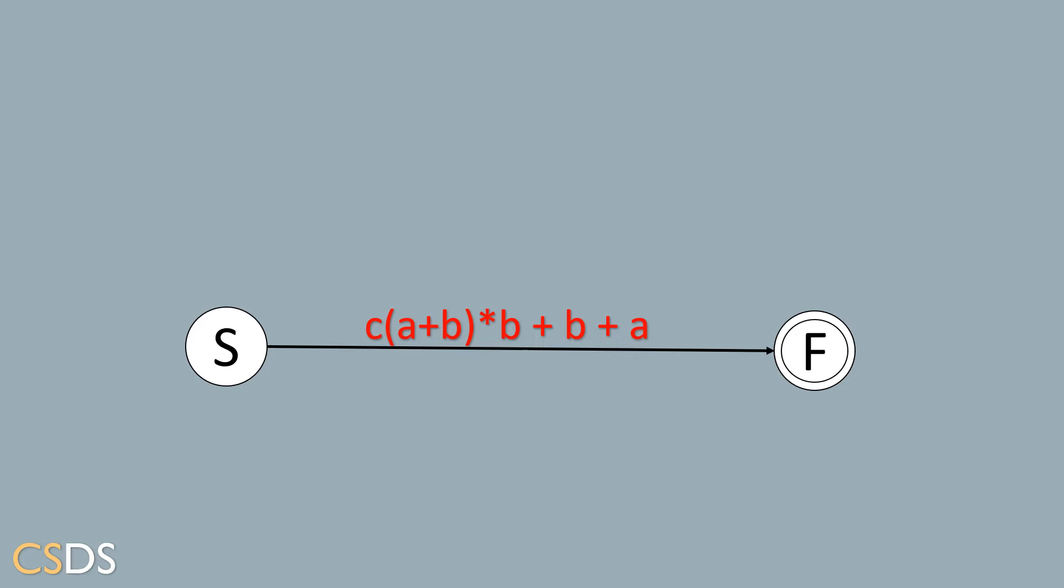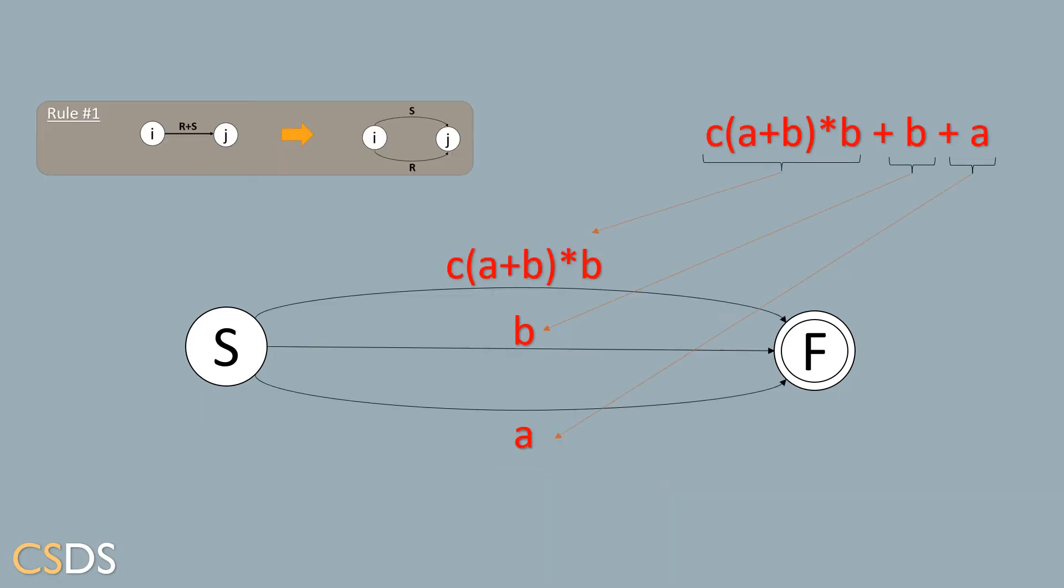We'll start by using rule number one on the plus operators. So after using rule number one, we'll get the following automata where we have three transitions according to the three different expressions separated by the plus operator.